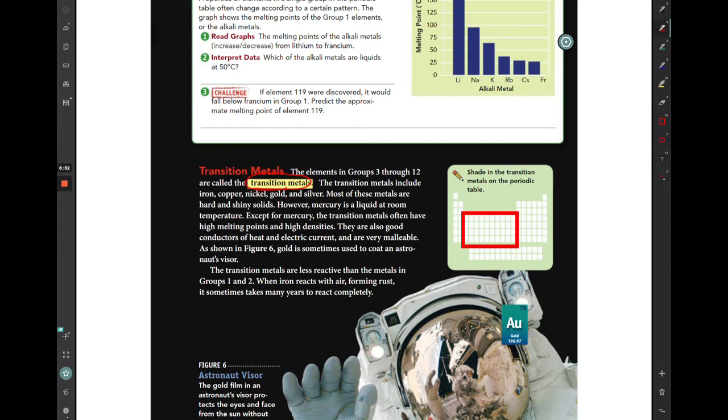These include many of the metals that you are familiar with. Iron, copper, nickel, gold, silver. Those types of metals. They are less reactive than the metals in group 1 and 2. So it takes a little bit longer. That's why when iron rusts it takes a long time for iron to turn completely to rust and to go away.